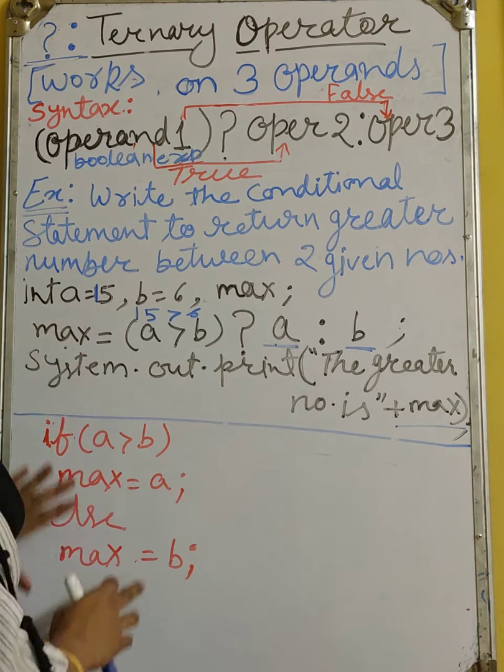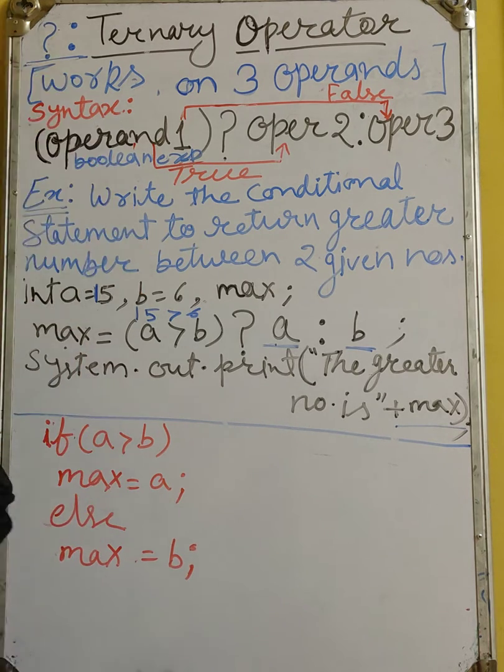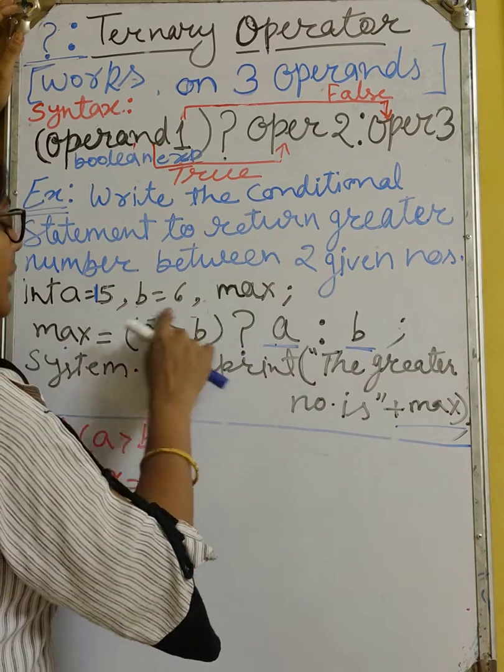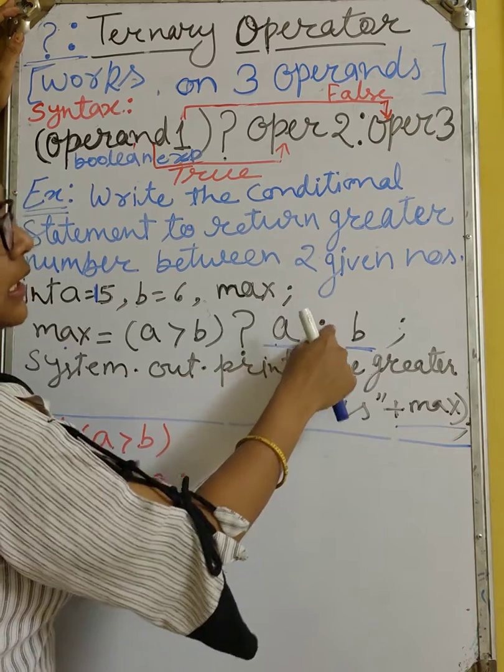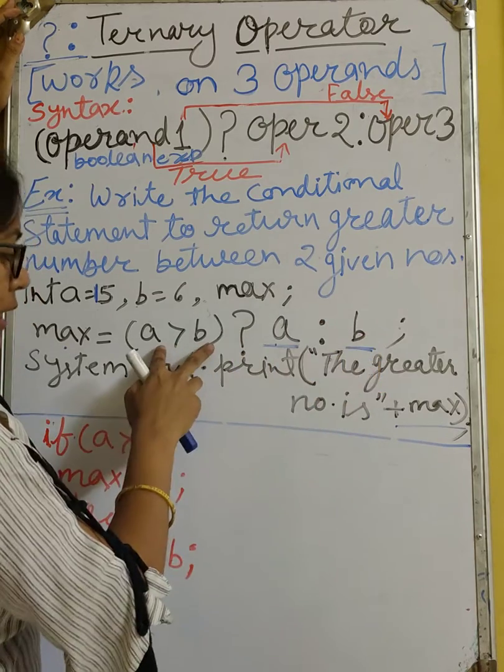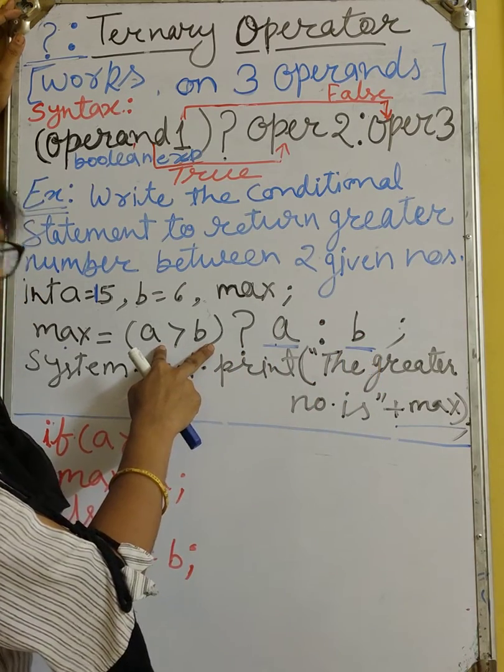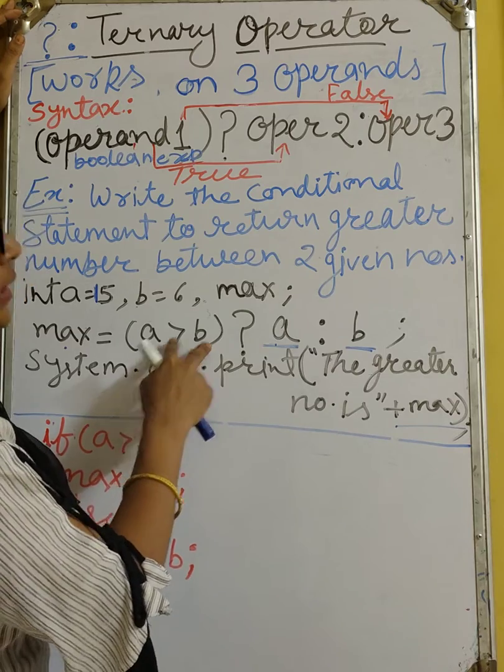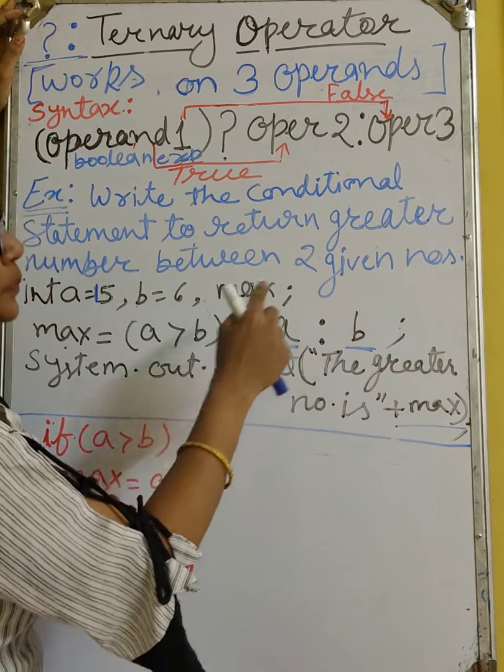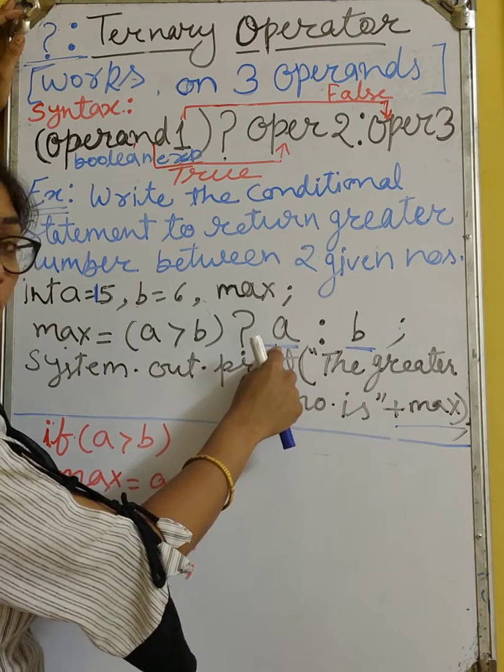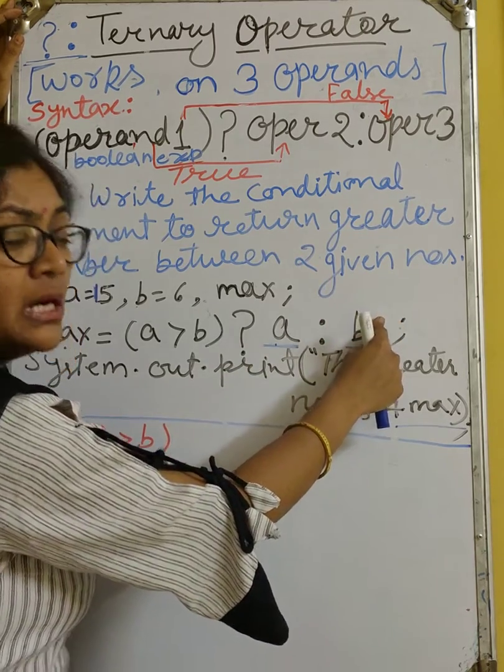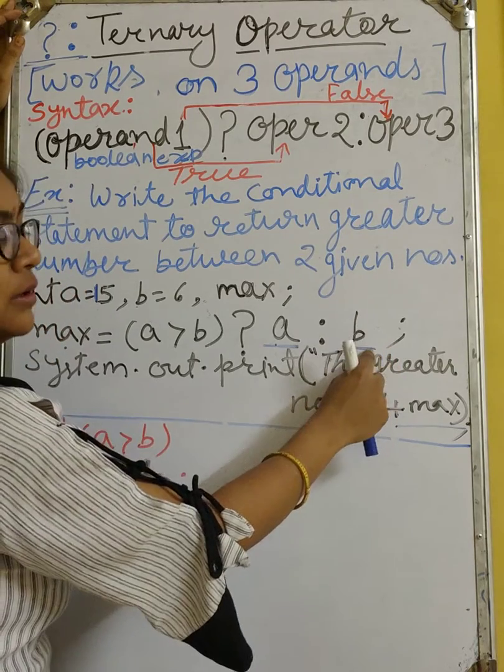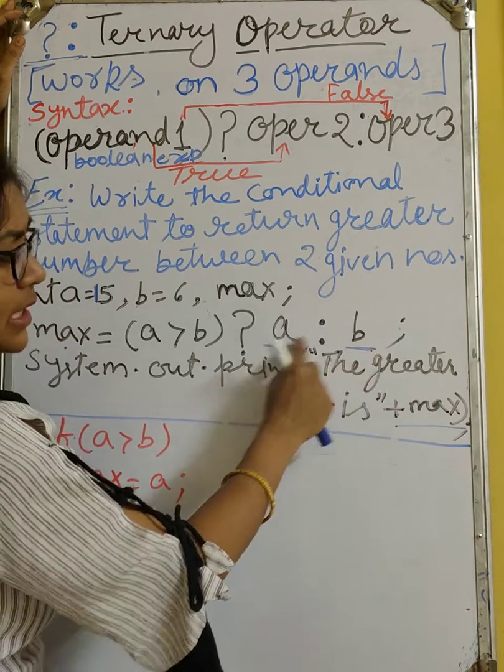So same statement, I am going to write down using the ternary like that: A greater than B, question mark A, colon B. Means A greater than B, this is your operand 1, boolean expression. Then the question mark, then what is to be executed in operand 2, then colon sign, what is to be executed in operand 3. Here I have written A and B.